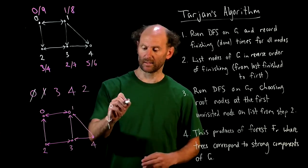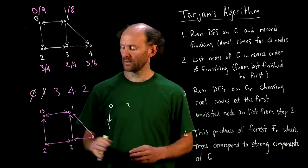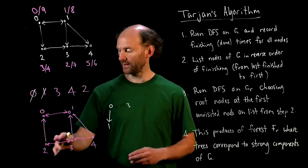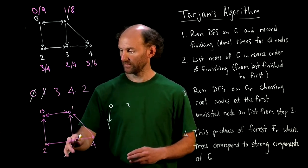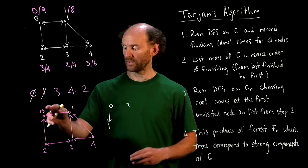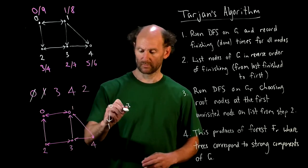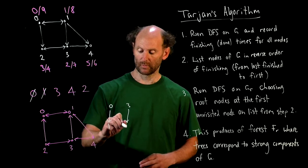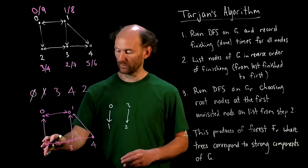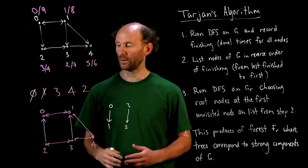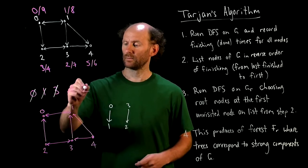And the next on the list is node 3, so we'll start a new tree at 3, and the only place we can visit from there is 2, because 0 and 1 are already done, so 3 goes to 2, and once we're at 2, there's nowhere we can go, so we're done with 3 and done with 2.